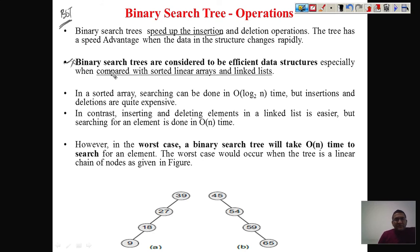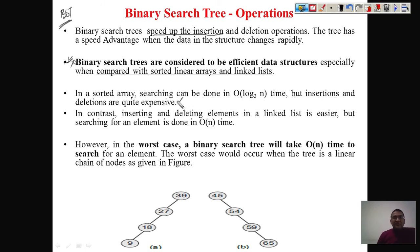BST is assumed to be better than linear arrays or linked lists. In a sorted array, searching can be done in O(log n) time using binary search, which is quite efficient. However, insertion and deletion in an array are very expensive operations — if you have a sequence of n elements, insertion and deletion cost O(n) because you need to shift elements.